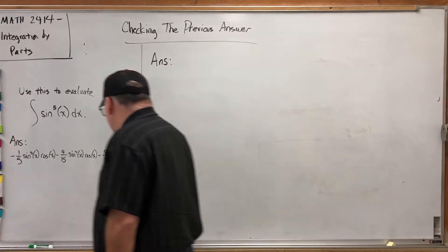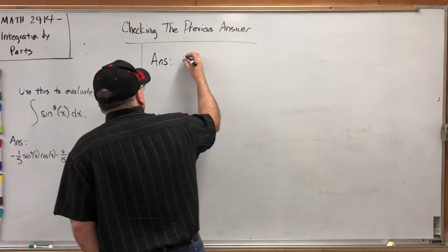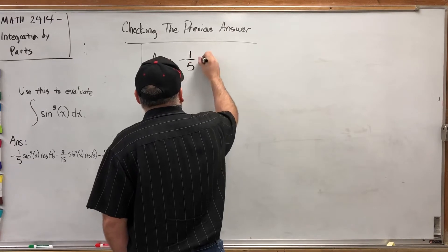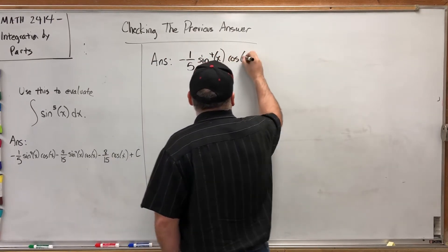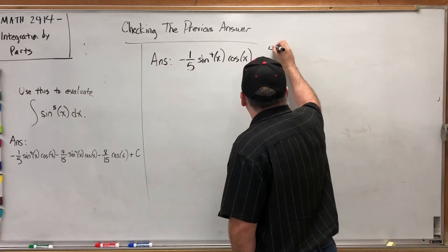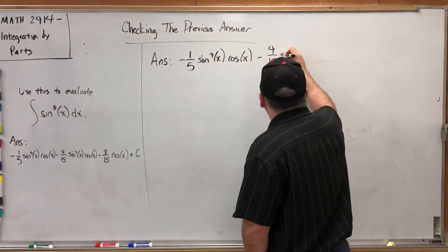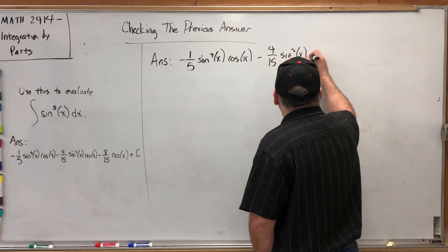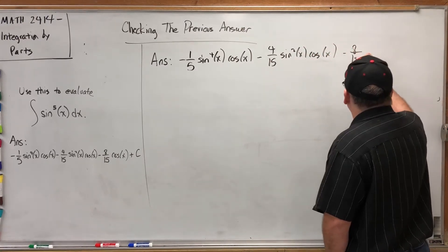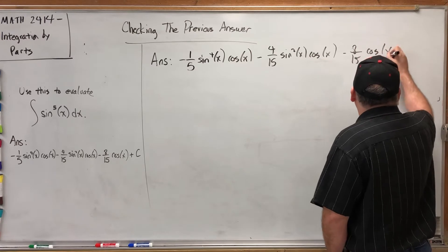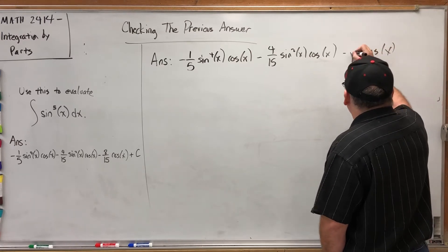Let's start by taking this: negative one-fifth sine to the fourth power of X cosine of X minus four-fifteenths sine squared of X cosine of X and then minus eight-fifteenths cosine of X.